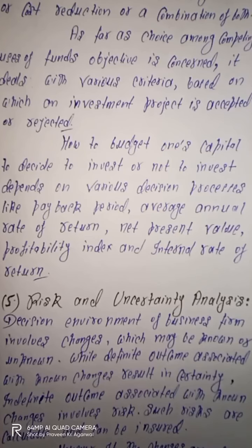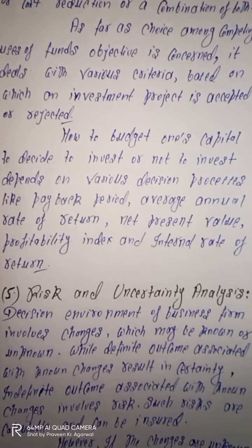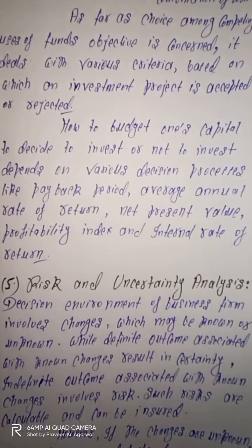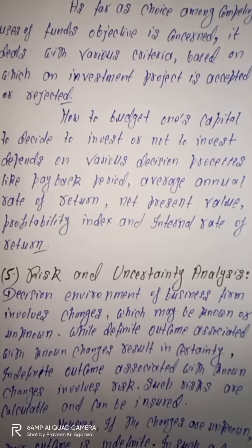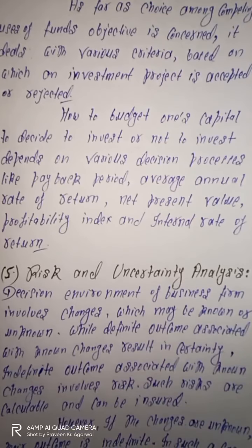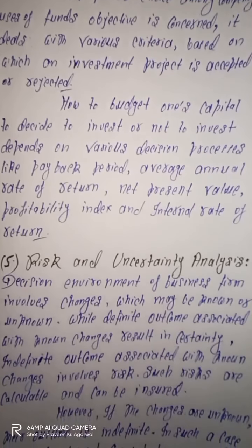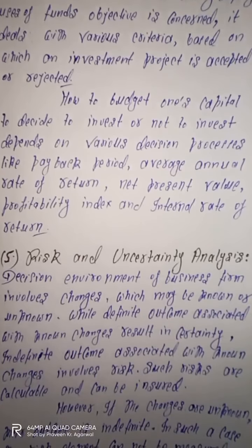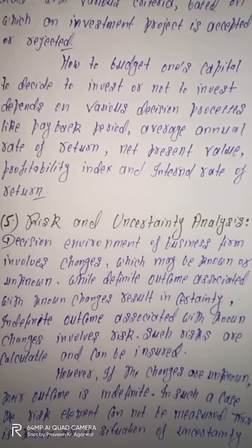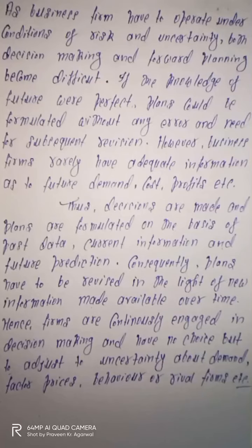While indefinite outcomes associated with known changes involve risk — यानि कि अगर changes known हैं लेकिन outcomes indefinite आते हैं तो हम इसे बोलेंगे situation of risk। Risk को आप calculate कर सकते हो और calculate करने की वजह से इसे insure भी किया जा सकता है, तो इस तरह से risk को आप control कर सकते हो। लेकिन एक situation arise होती है जहाँ changes unknown होते हैं और जो उनके outcomes होते हैं वो भी indefinite होते हैं — तो अगर changes unknown हैं और outcomes indefinite हैं तो risk element को properly measure नहीं किया जा सकता, और जब risk को measure नहीं किया जा सकता तो हम इस situation को बोलते हैं situation of uncertainty। Business firms को risk और uncertainty की situation में operate करना होता है।